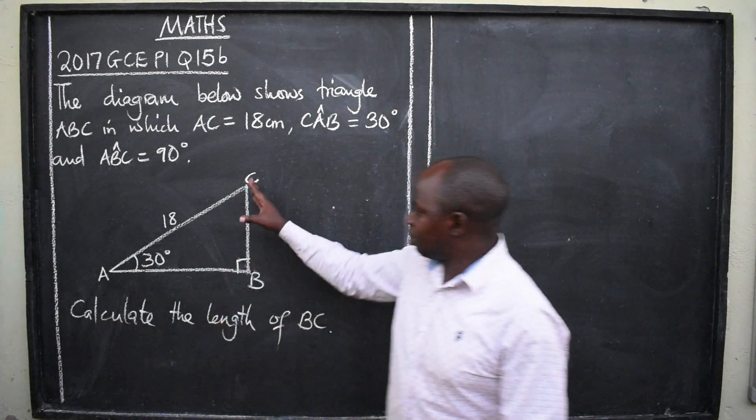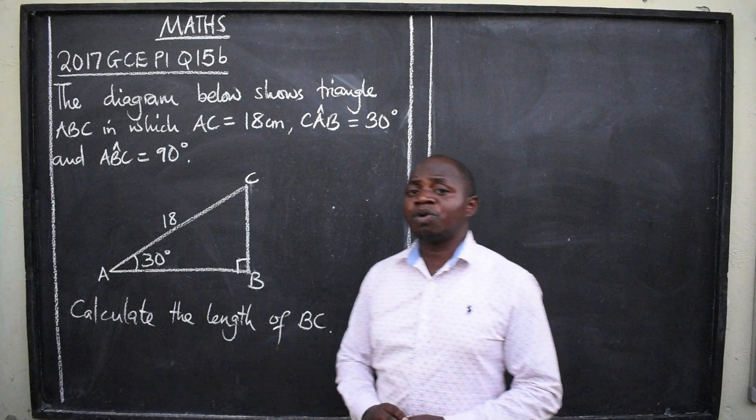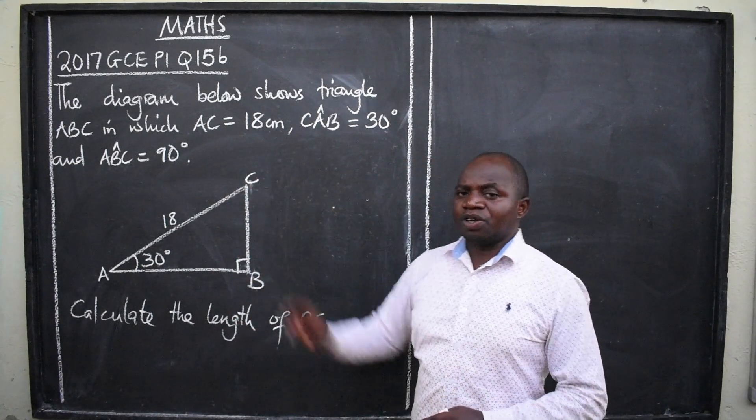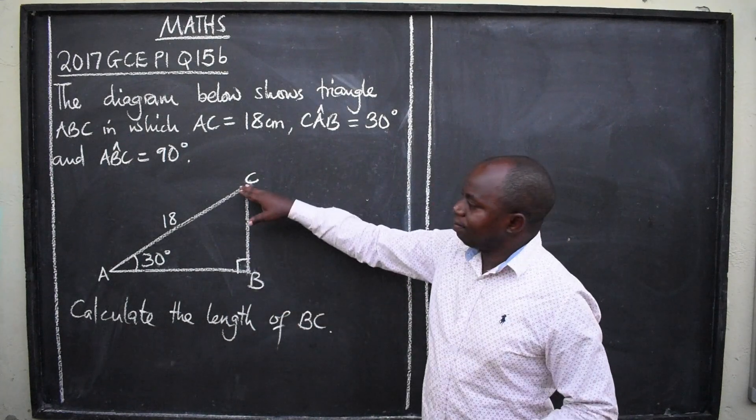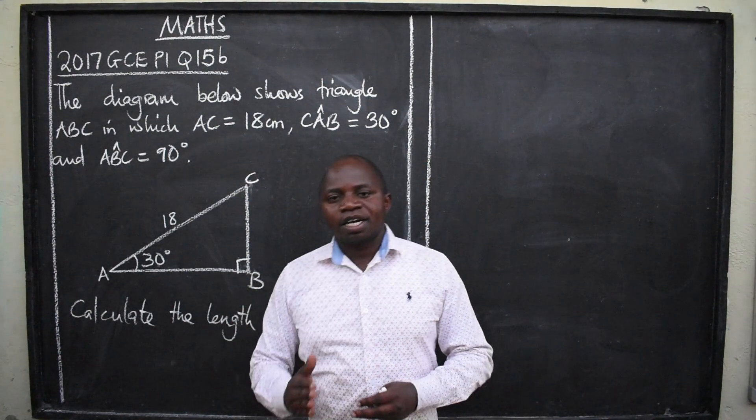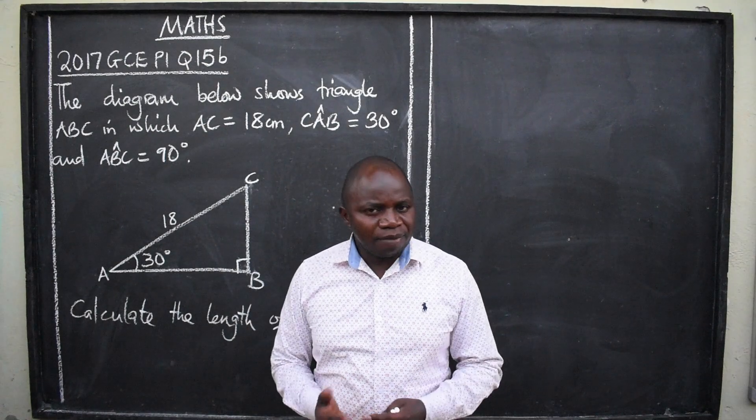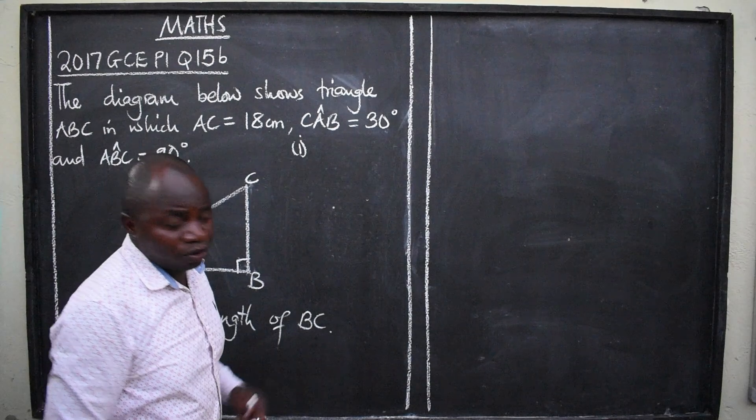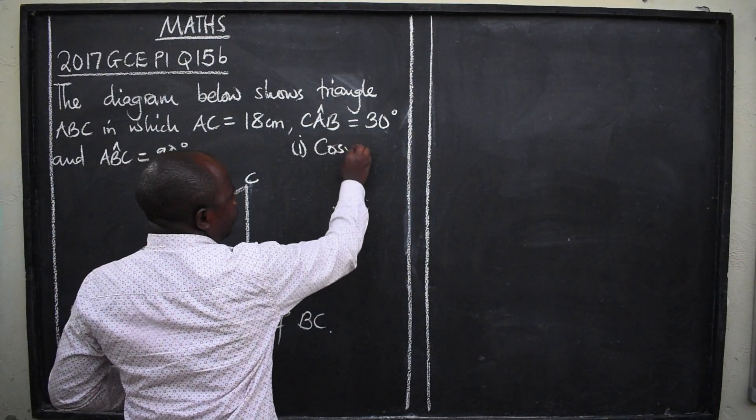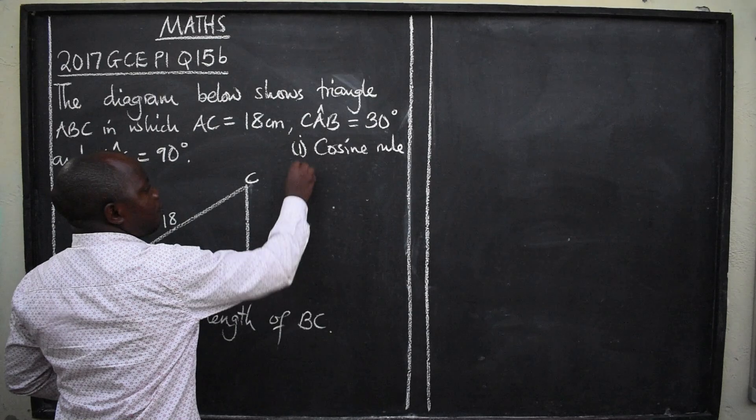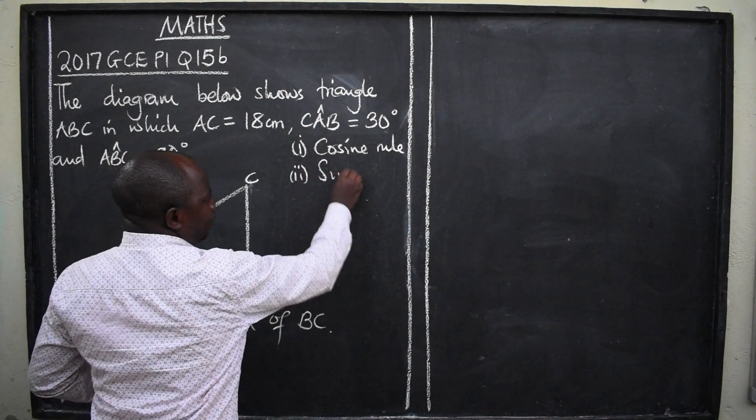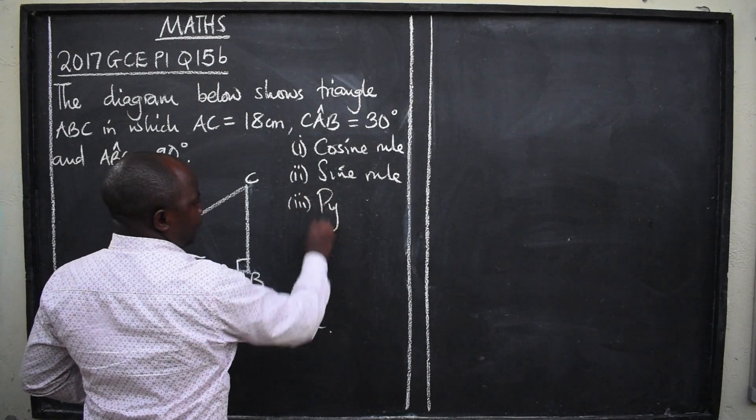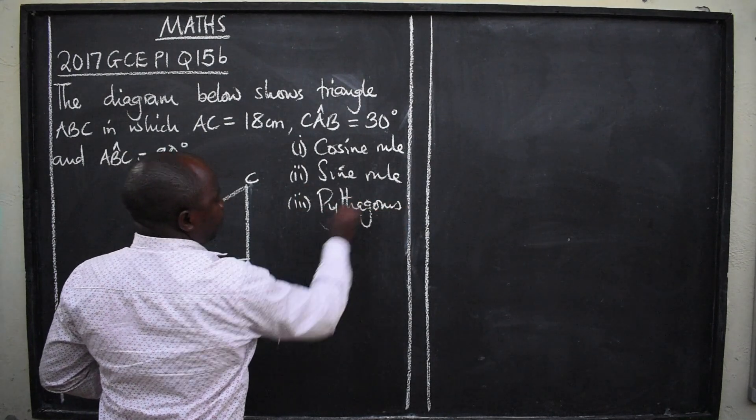Now, to get the length of this BC, first of all, you have to identify the topic from which the question is coming from. This is trigonometry. Now, to get the length of BC, we have different formulas that can be used. First one, in a triangle, you can use what we call cosine rule. So we have what we call cosine rule. We also have the sine rule. We also have what we call Pythagoras theorem. We also have what we call the SOHCAHTOA.